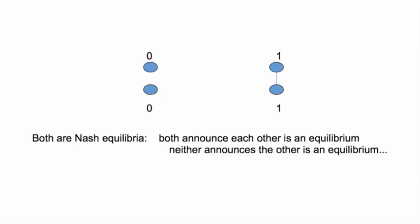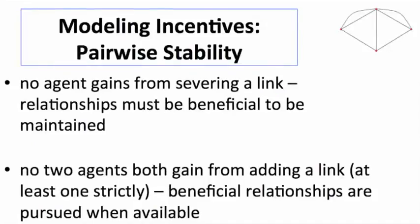Now there are ways of dealing with this in terms of game theory. We can put in stronger solution concepts, allow for slight errors by players and see what happens. But there are other examples that give other solution concepts trouble. So what we're going to do is instead of using off-the-shelf non-cooperative game theory, we're going to model incentives using a very simple concept which we'll call pairwise stability.